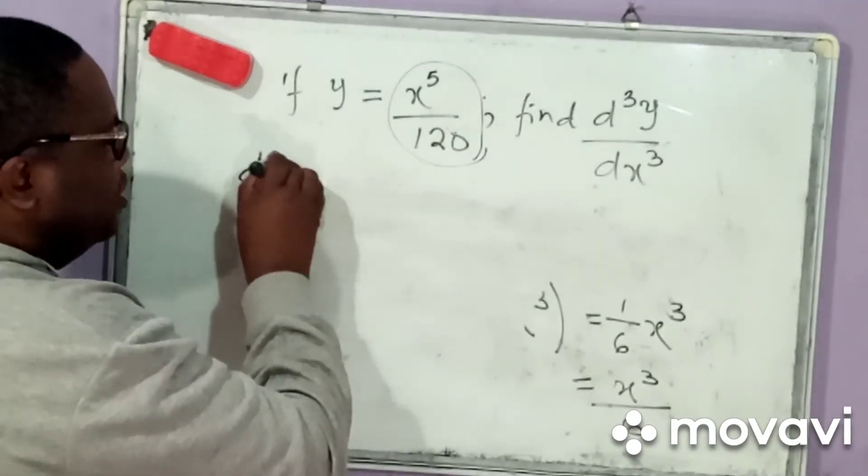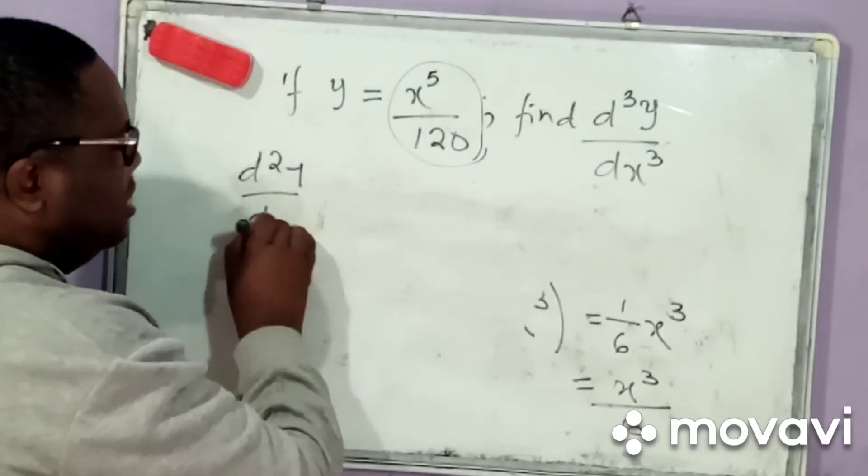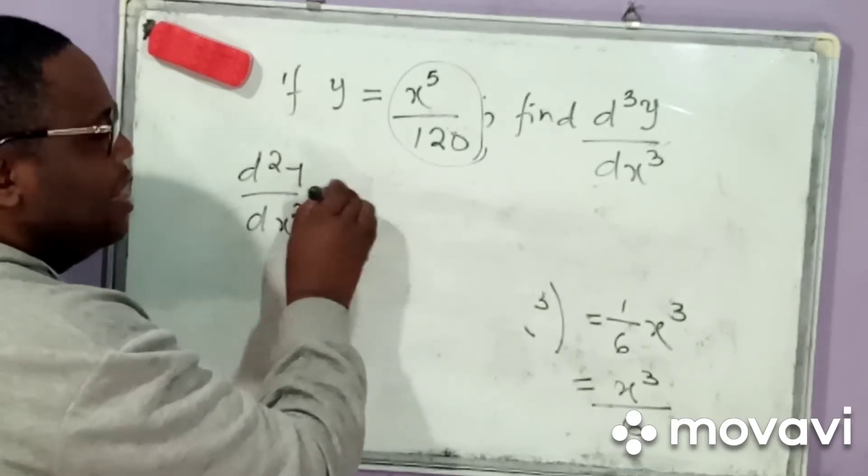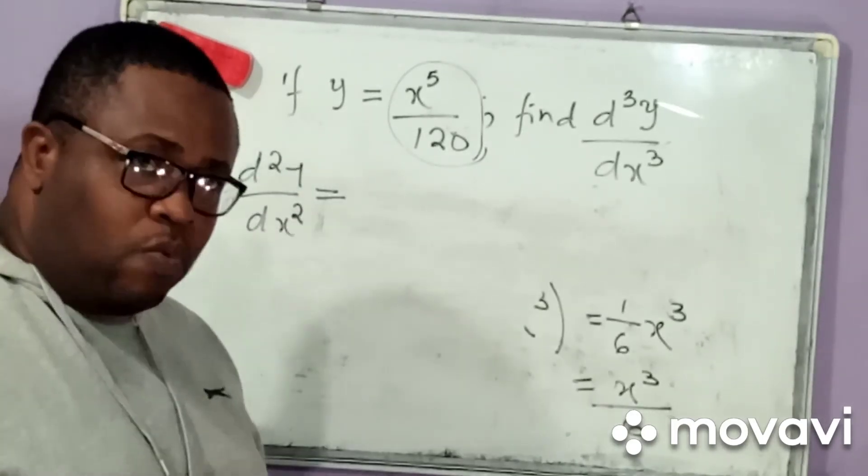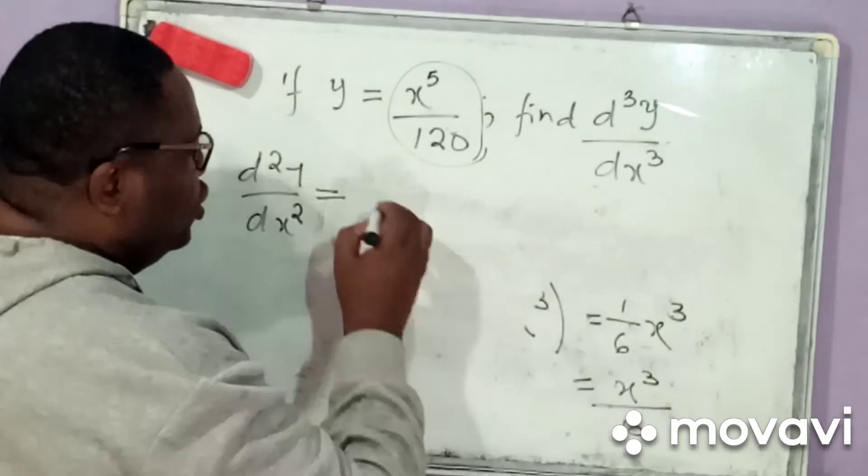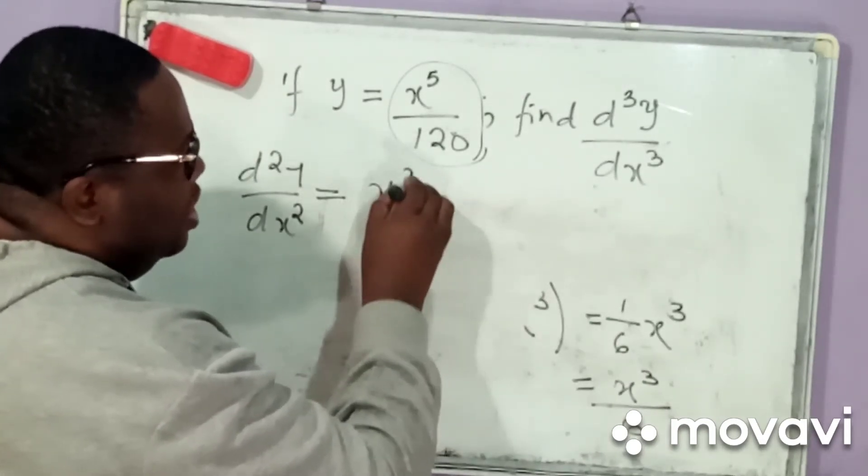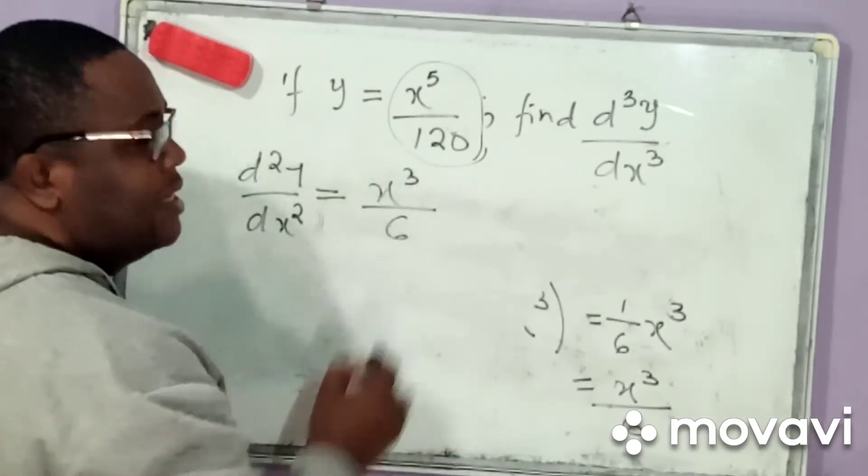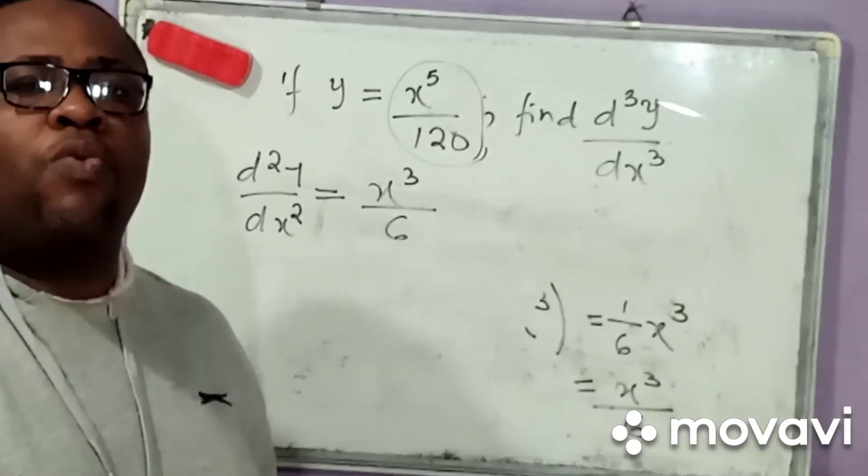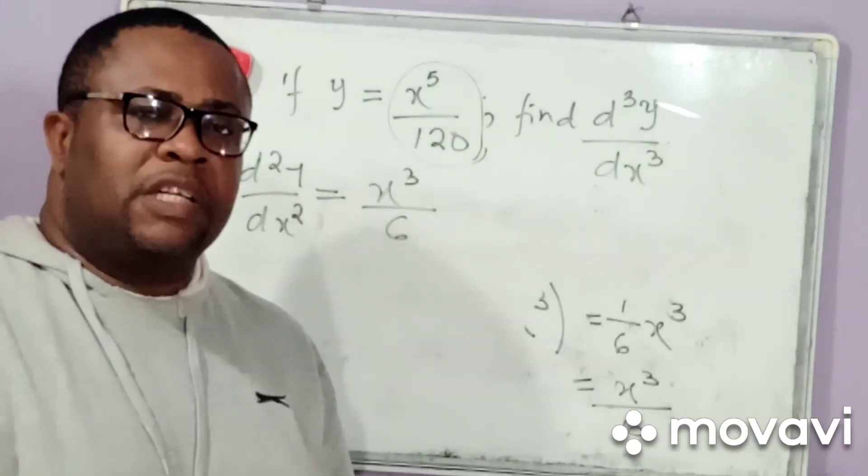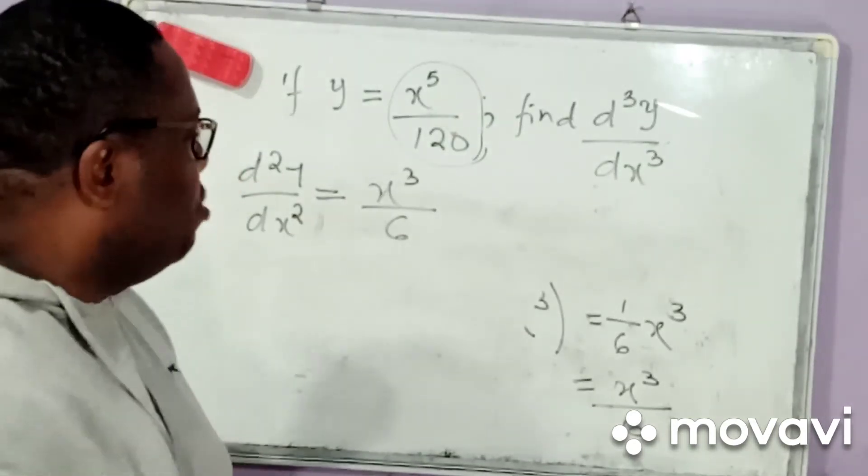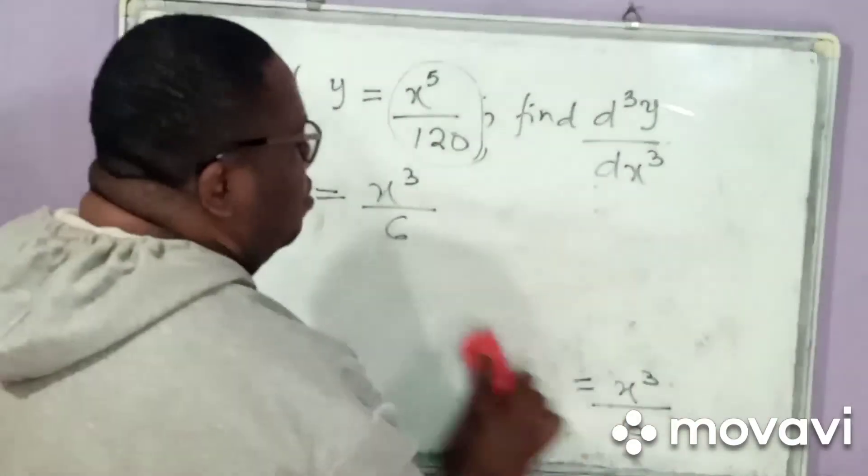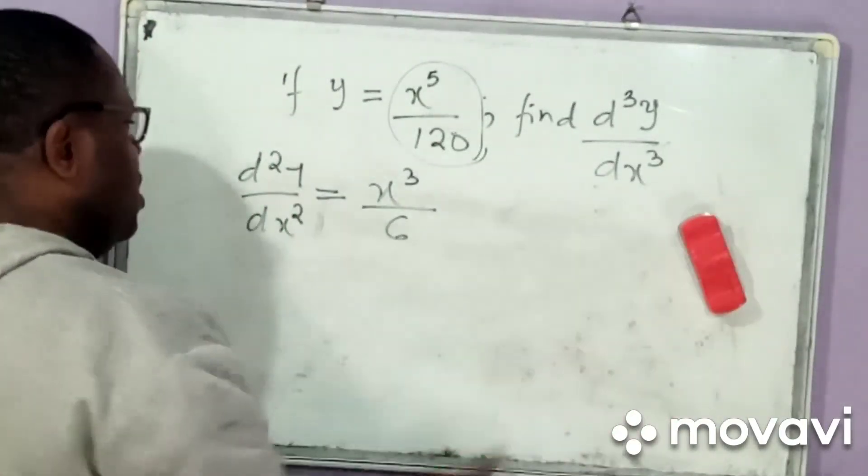So, I have just found that d squared y by dx squared is simply equal to, I have found it to be x cubed divided by 6. Okay, what about the third derivative, that is d cubed y by dx cubed, that we have been asked to provide a solution for?